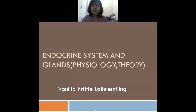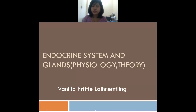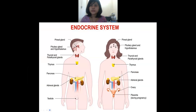Good morning students. Today we'll be discussing the endocrine system and glands. First I will explain all about the endocrine system and glands, and after that we will have a discussion or question round. Let me show you the glands of the endocrine system. The glands are: pineal gland, pituitary gland, hypothalamus, thyroid, parathyroid, thymus, pancreas, adrenal glands, and testes in males, and ovaries in females.